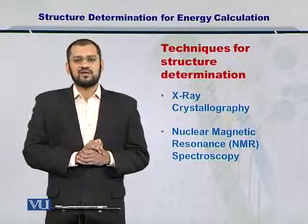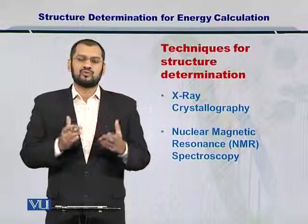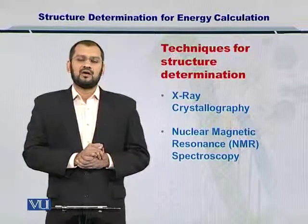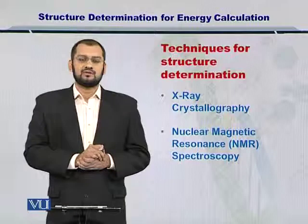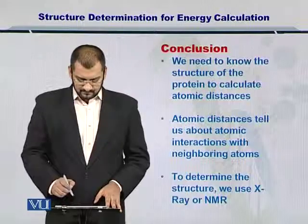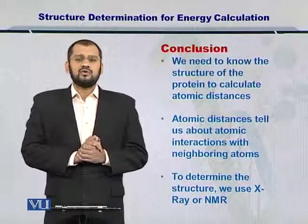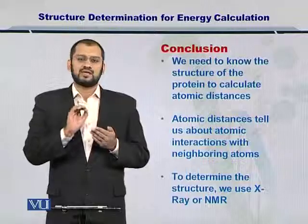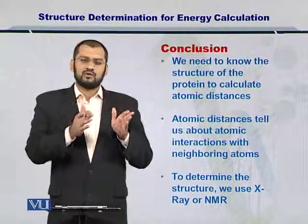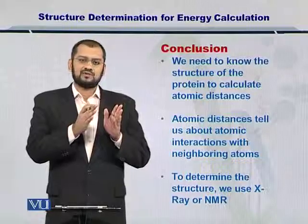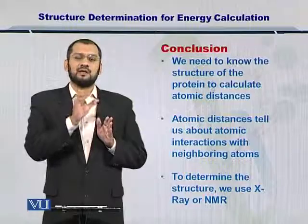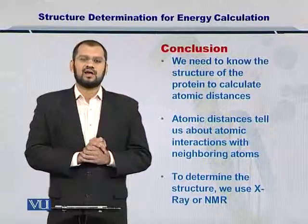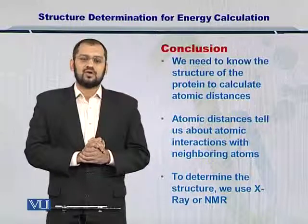There are two techniques that are typically employed these days. The first one is X-ray crystallography and the second one is NMR, or nuclear magnetic resonance spectroscopy. You can use NMR or X-ray to look at the position of each atom within the protein, the distance between these atoms, and assign which interaction may be taking place. Therefore, you can sum the entire energy content of the protein.